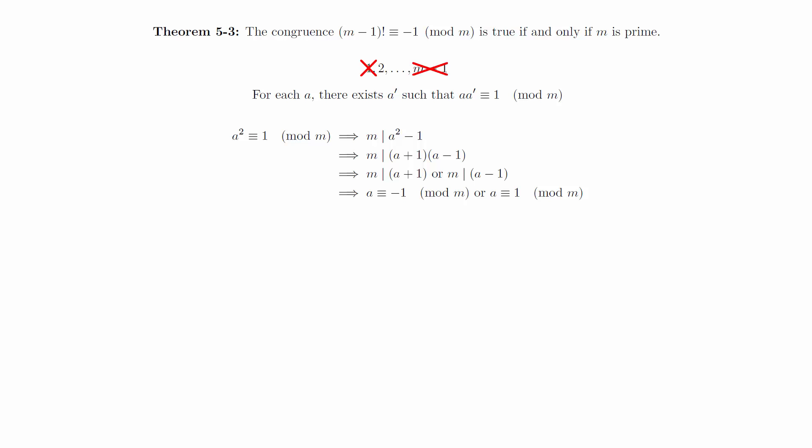Because of this, we will remove 1 and m minus 1 from the list to leave us with just 2, 3, 4, up to m minus 2. The preceding calculations show that we can pair these elements up with their inverse.